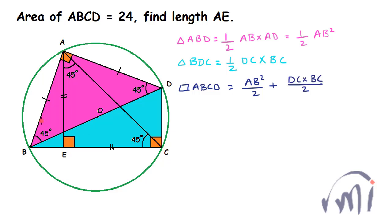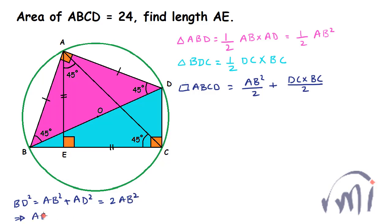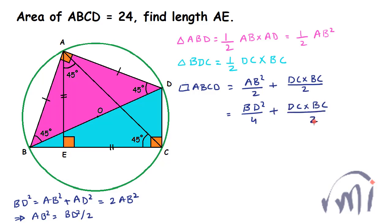Triangle ABD is a right angle triangle, so BD squared equals AB squared plus AD squared. Since AB and AD are equal, this gives BD squared equals 2 times AB squared. Therefore AB squared equals BD squared divided by 2, which means AB squared divided by 2 equals BD squared divided by 4. So the area expression becomes BD squared divided by 4 plus DC times BC divided by 2.